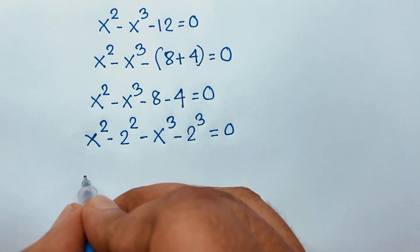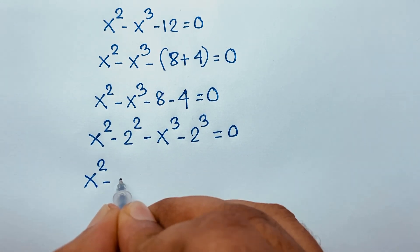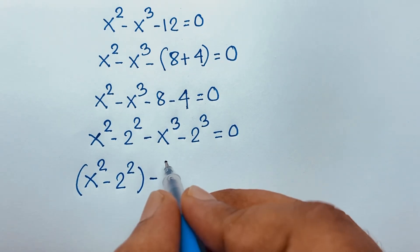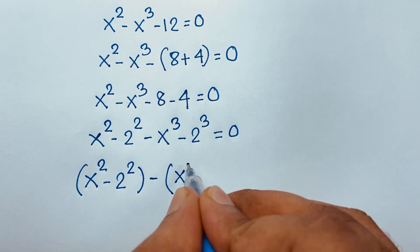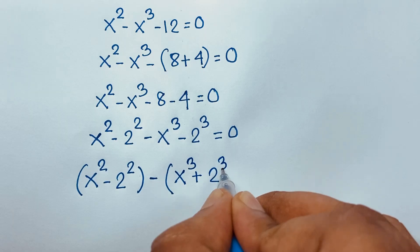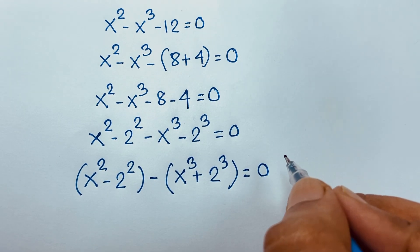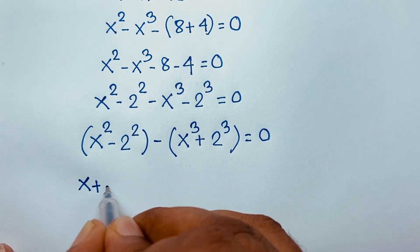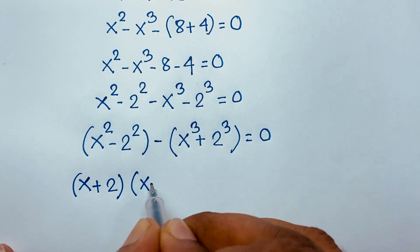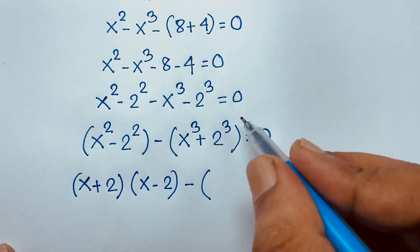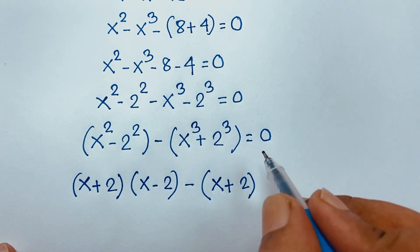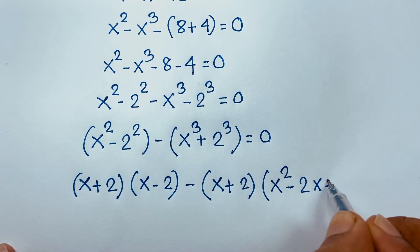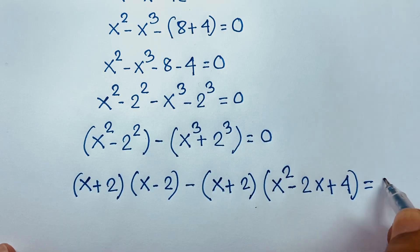Now you can see here: x to the power 2 minus 2 to the power 2, and negative sign is common. If I take the negative sign as common, it will be x to the power 3 plus 2 to the power 3, equal to 0. Now here we have a squared minus b squared, which equals a plus b times a minus b. And a cubed plus b cubed equals a plus b times a squared minus ab plus b squared. So 2 to the power 2 is 4, equal to 0.